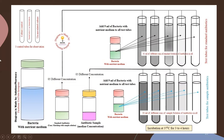This image shows how to perform the turbidimetric method. Instead of using one concentration of the test antibiotic, this image contains five concentrations of the test antibiotic. You can use five concentrations of the standard and one test tube of the test antibiotic.